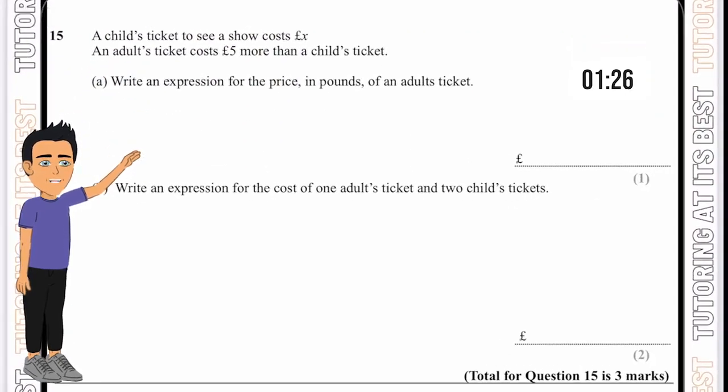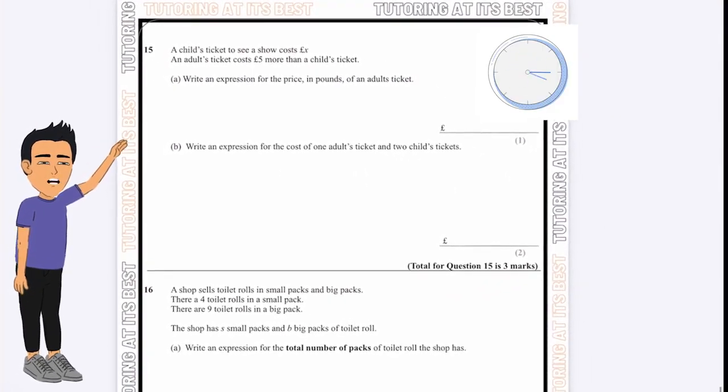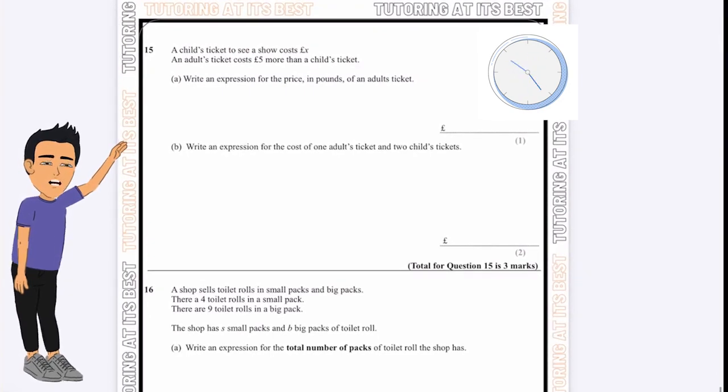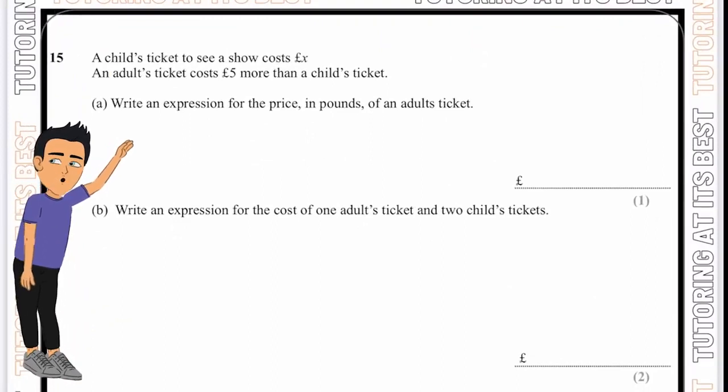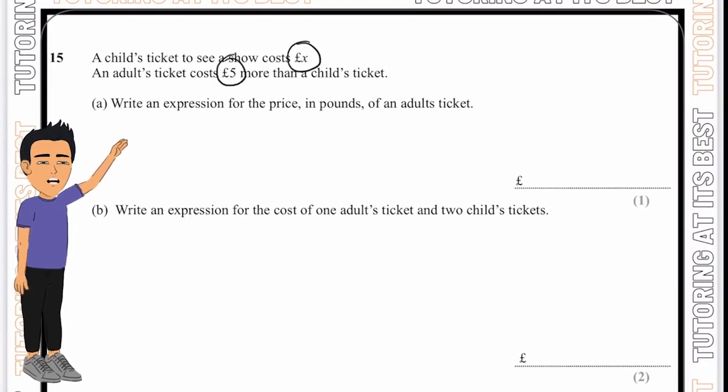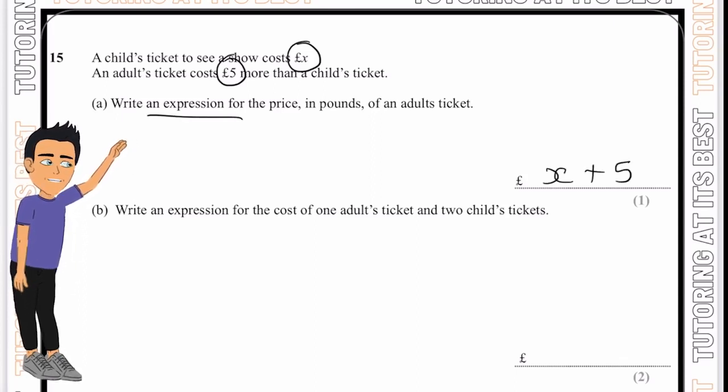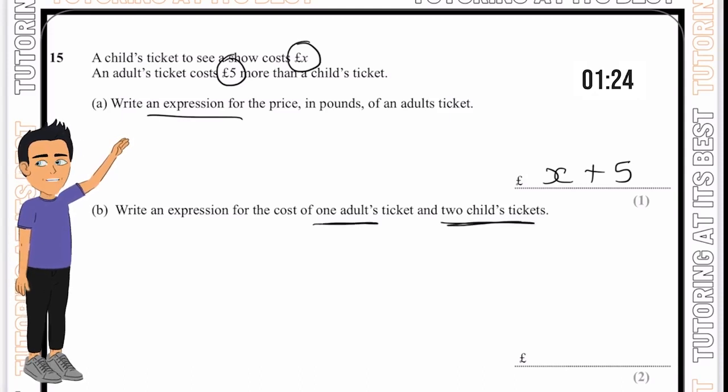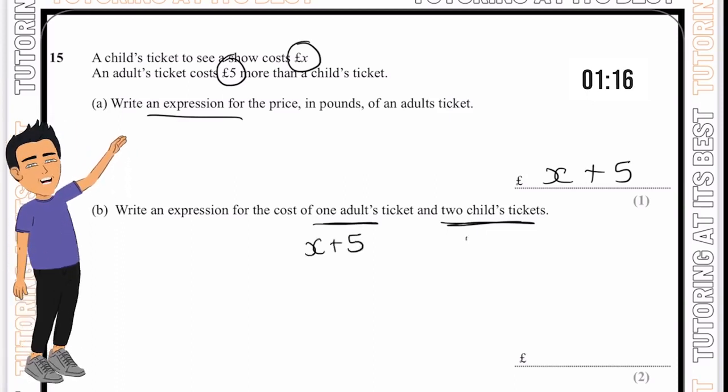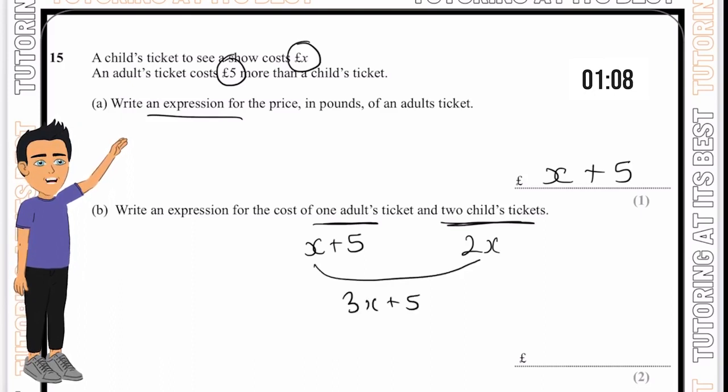Our last two questions now. Let's pause the video, attempt these questions, and then we'll go through it together. Question 15a. A child's ticket to see a show costs x pounds and an adult's ticket costs five pounds more. The total expression for this will be x plus five. Part b, write an expression for the cost of one adult's ticket and two children's tickets. An adult's ticket is x plus five, two children's tickets will be 2x. Put that together, and that gives us 3x plus five.